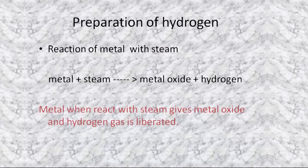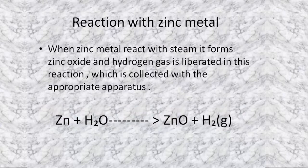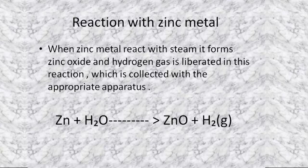When a metal reacts with steam, it gives out a metal oxide and hydrogen gas is liberated. In the case of zinc metal, when zinc reacts with steam, it forms zinc oxide and hydrogen gas is liberated. This gas is then collected using an appropriate apparatus.